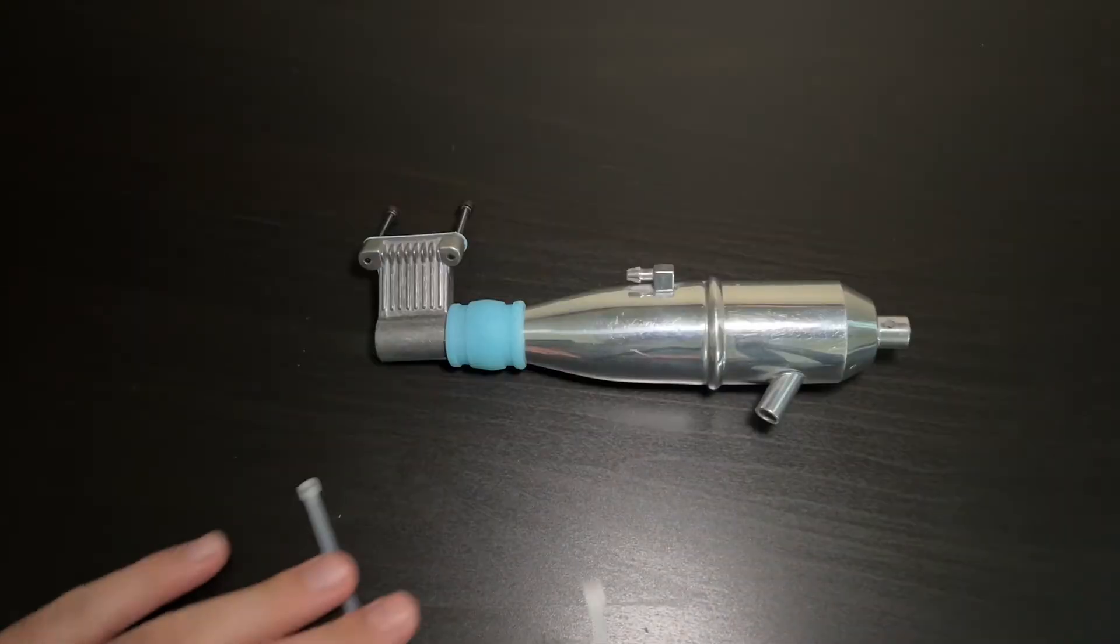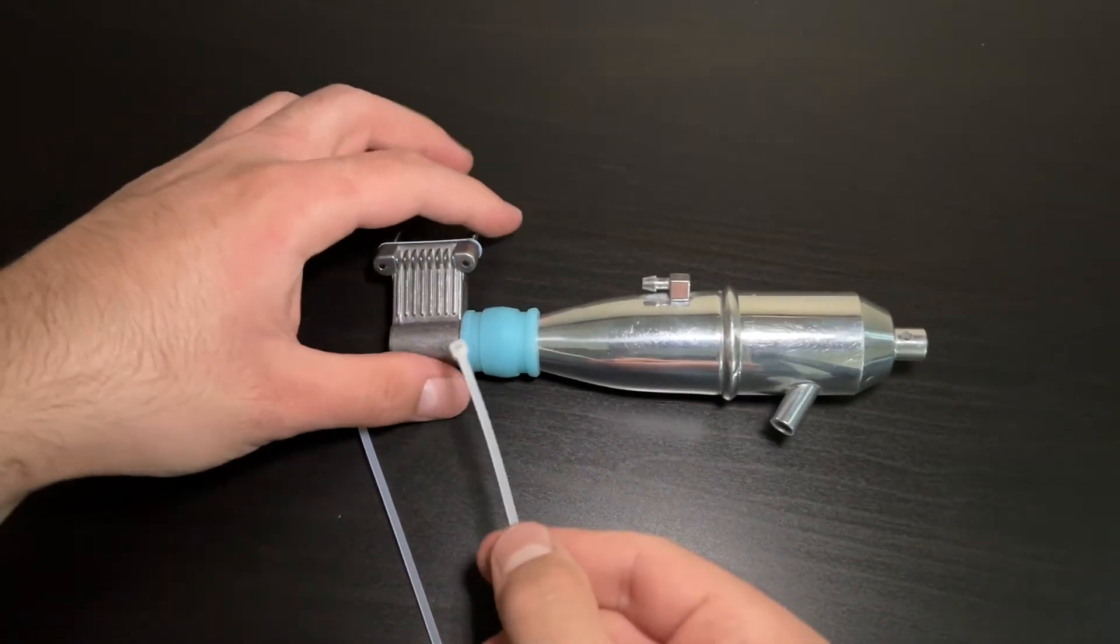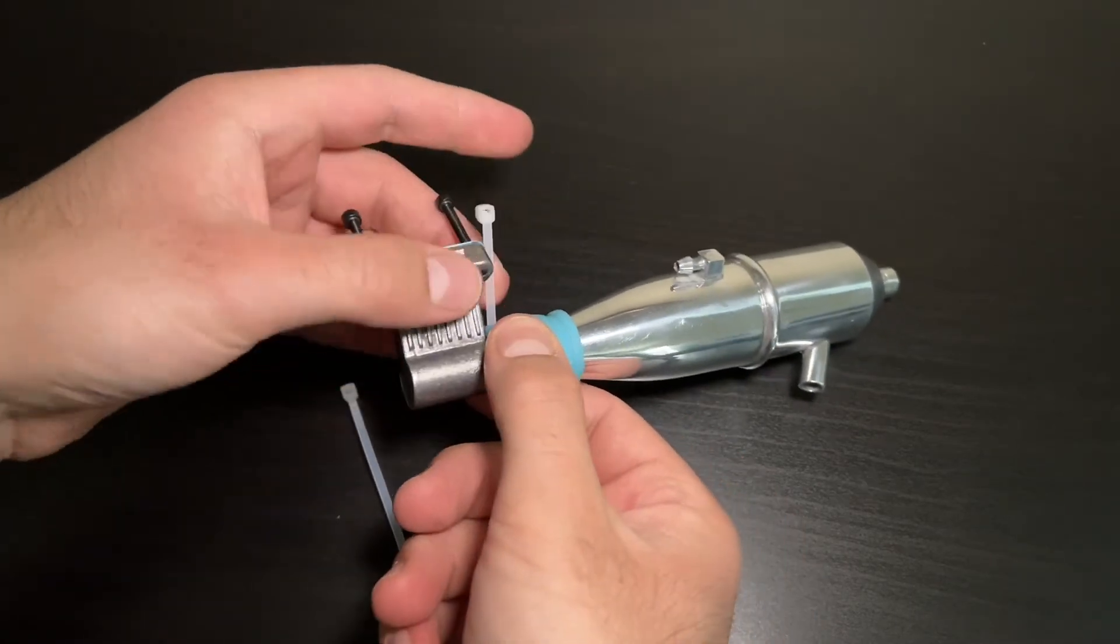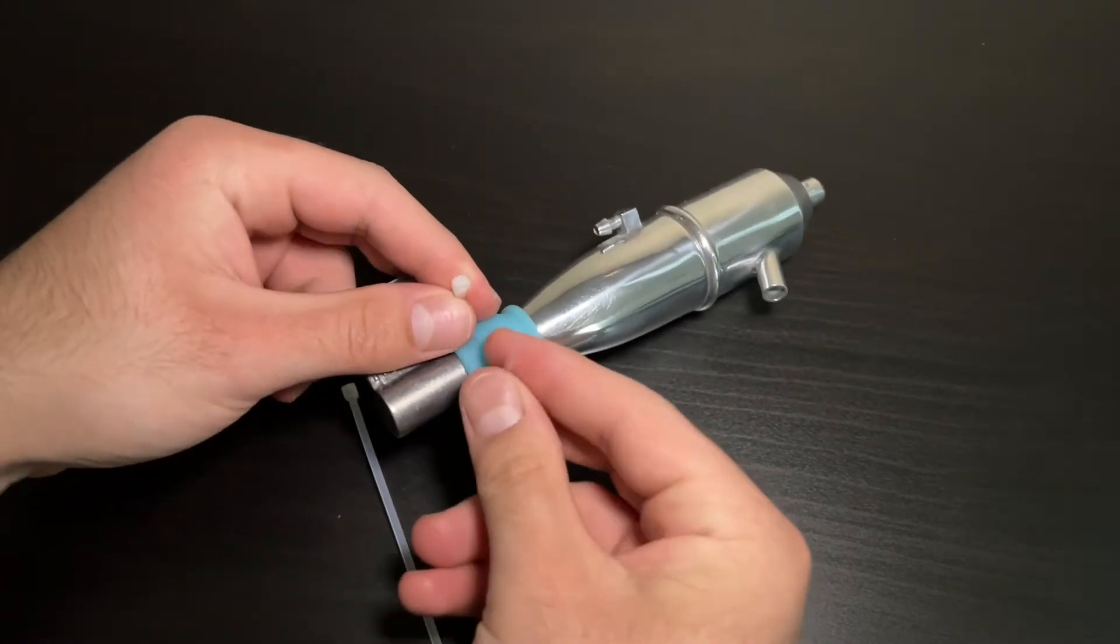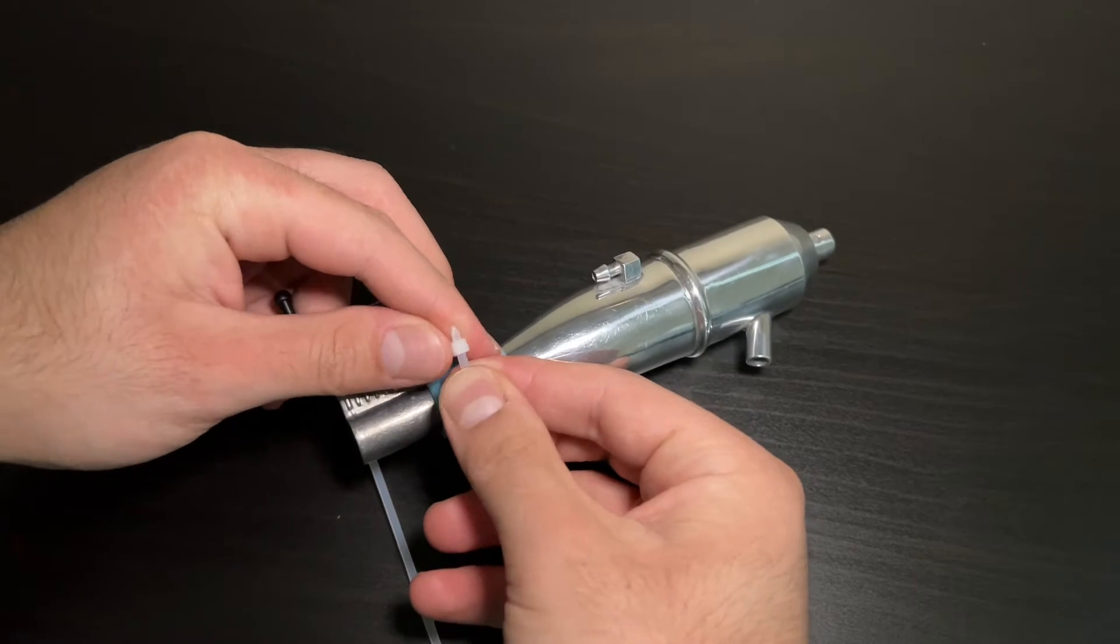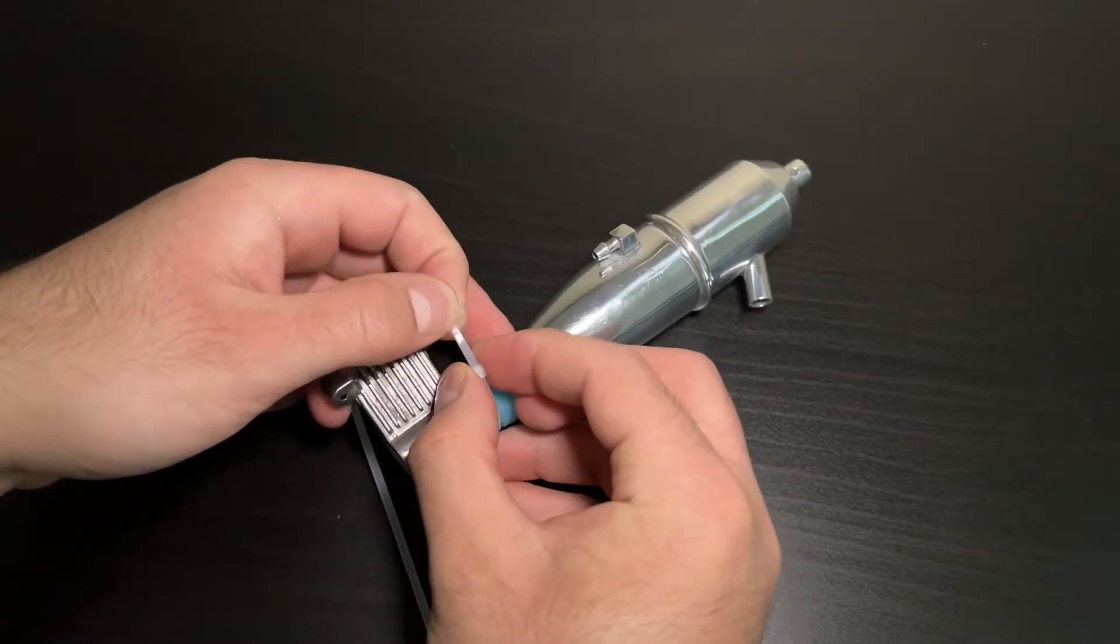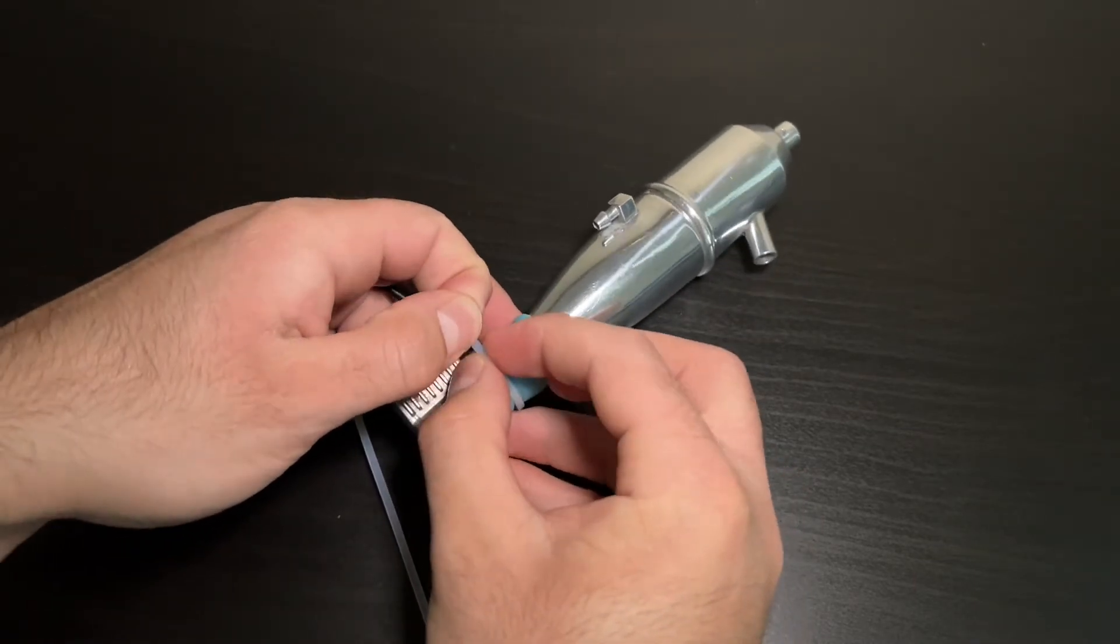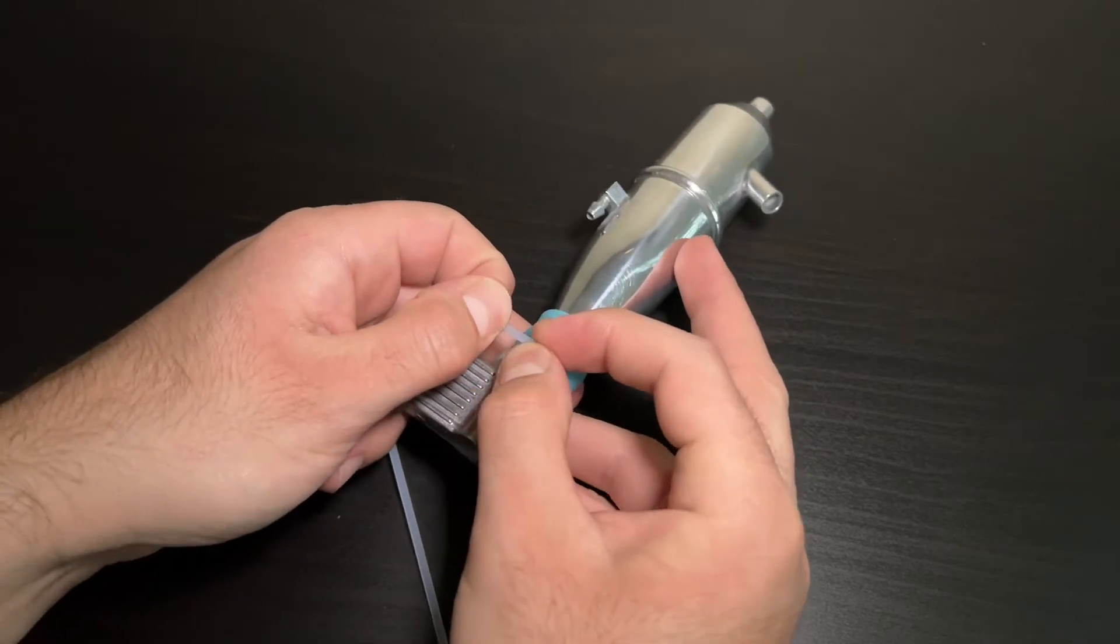Now I'm going to take my two zip ties and put it on this rubber connector. So I'm going to put it facing up and then pull this bit through just like this.